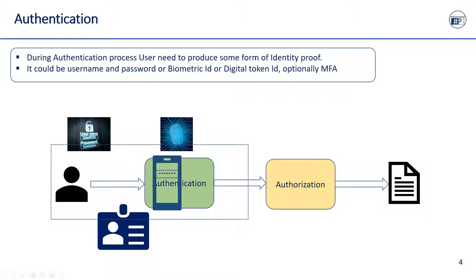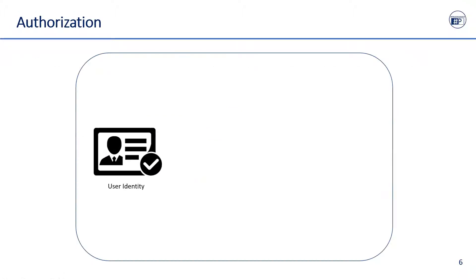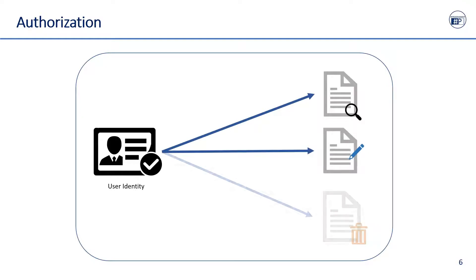If multi-factor authentication is enabled, then more steps are required to complete the authentication process. The second step of security is the authorization process, which checks whether the user has permission for the resource they are trying to access. For example, on a file storage system, any user can view and edit a file, but only an admin user can delete the file. If a non-admin user logs in, they can view the file.